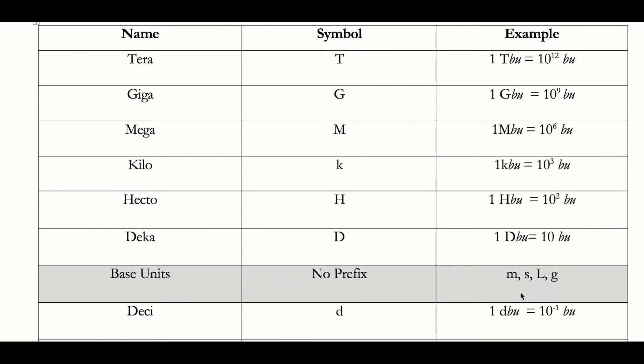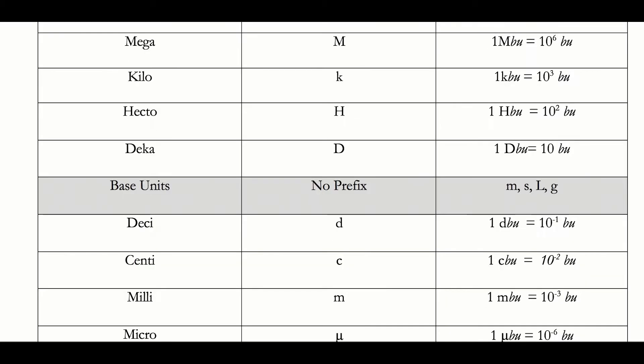Starting with one you're probably familiar with: centi. One centi base unit — so one centimeter, for example — equals 10 to the negative second meters. By putting the 'c' for centi in front, I've changed the value of that unit and made it quite a bit smaller. Instead of having one meter, one centimeter is 10 to the negative second meters — I've decreased the value by a hundredfold.